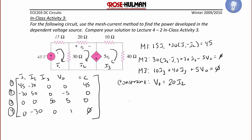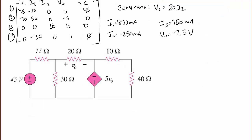So then when we solve this system of equations, we get I1 is 833 milliamps, I2 is negative 250 milliamps, I3 is 750 milliamps, and V0 is negative 7.5 volts. So we're going to label these values on our circuit: here we'll have 833 milliamps, here we're going to have negative 250 milliamps, and here we'll have 750 milliamps.